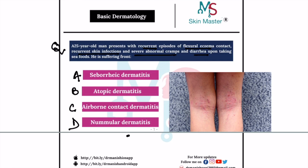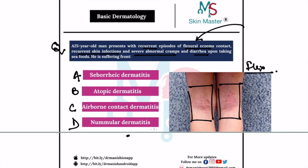The clue here is that this dermatitis is occurring at the flexors — for example, the popliteal fossa of the knee. So flexors are involved, and the condition is recurrent. It is persisting for a very long period, occurring again and again, making this a chronic or persistent condition.